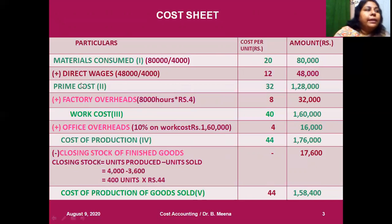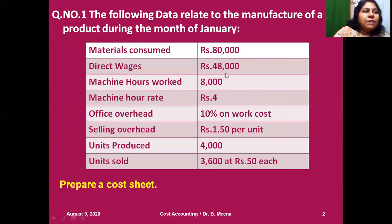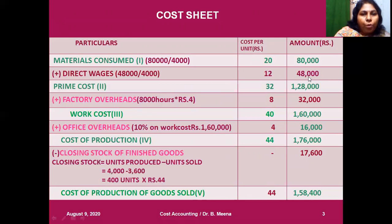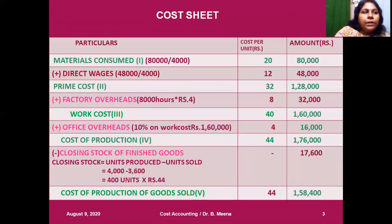That gives ₹20 per unit for materials. Direct wages given is ₹48,000 — put that in the amount column. 48,000 divided by 4,000 gives ₹12 per unit. So prime cost per unit is 20 plus 12 = ₹32, and total prime cost is 80,000 plus 48,000 = ₹1,28,000.